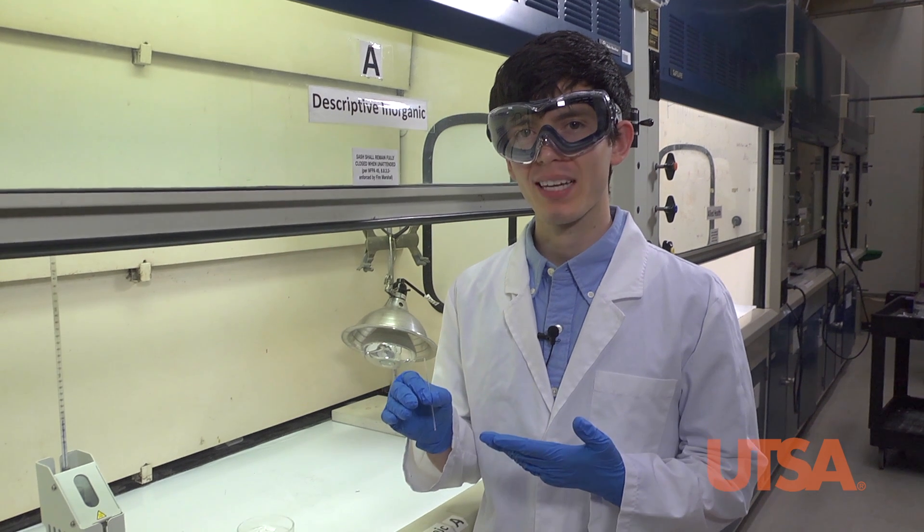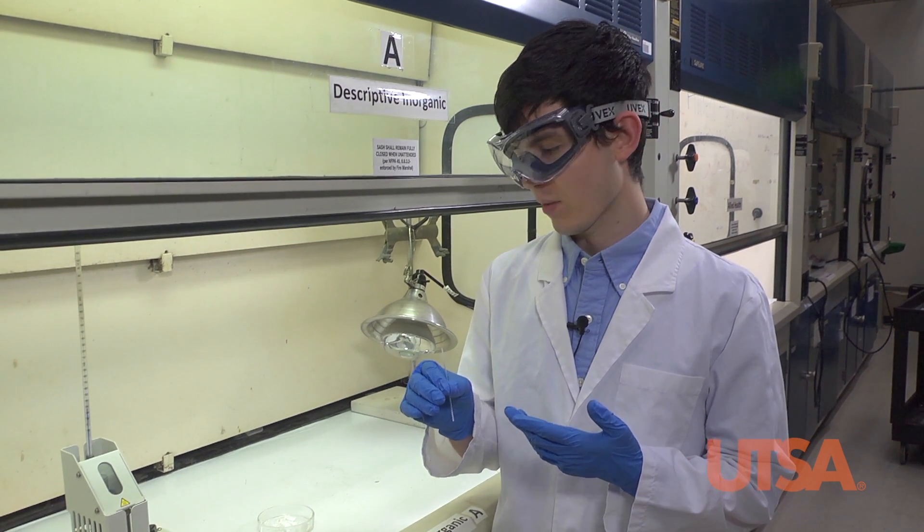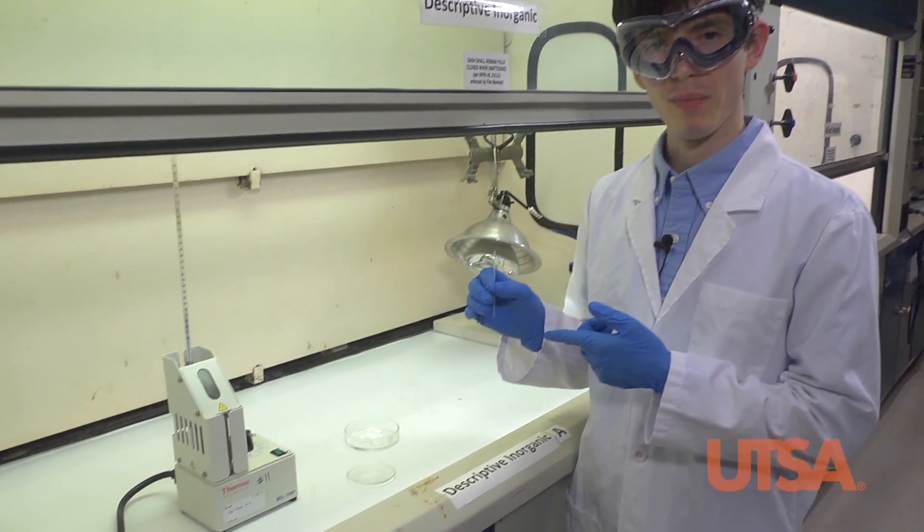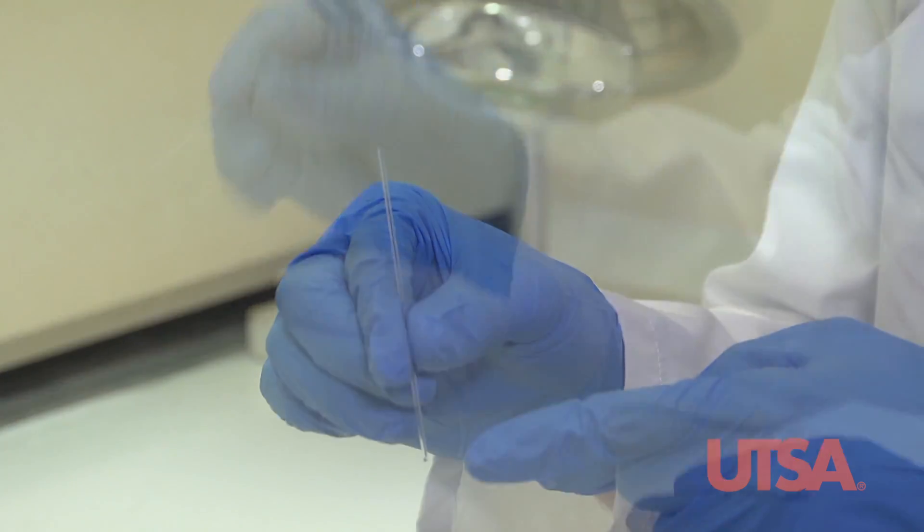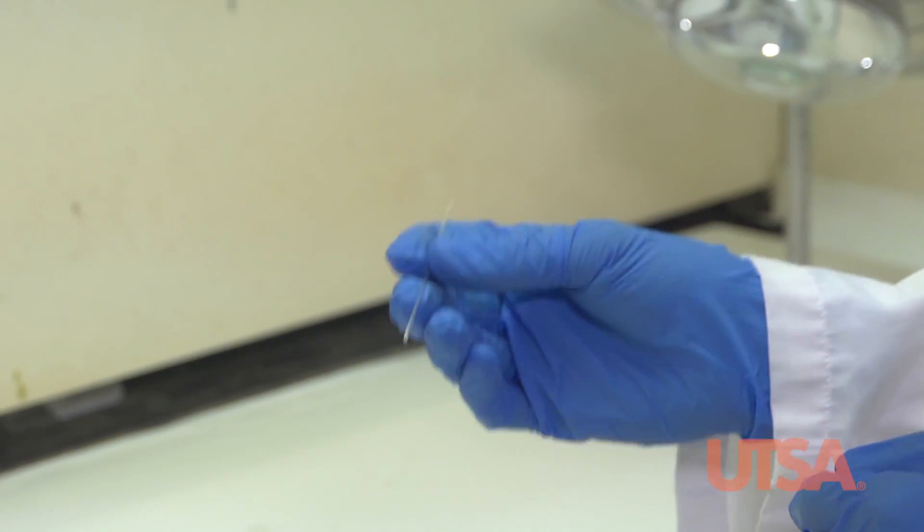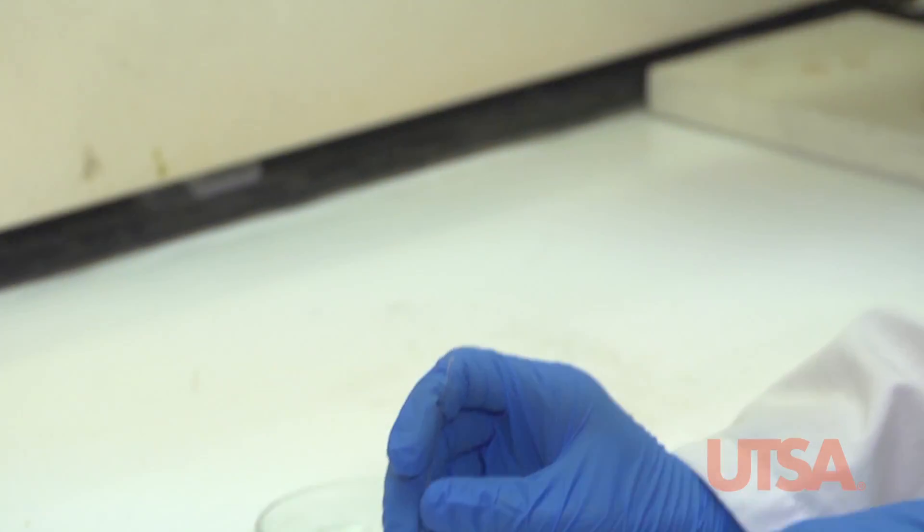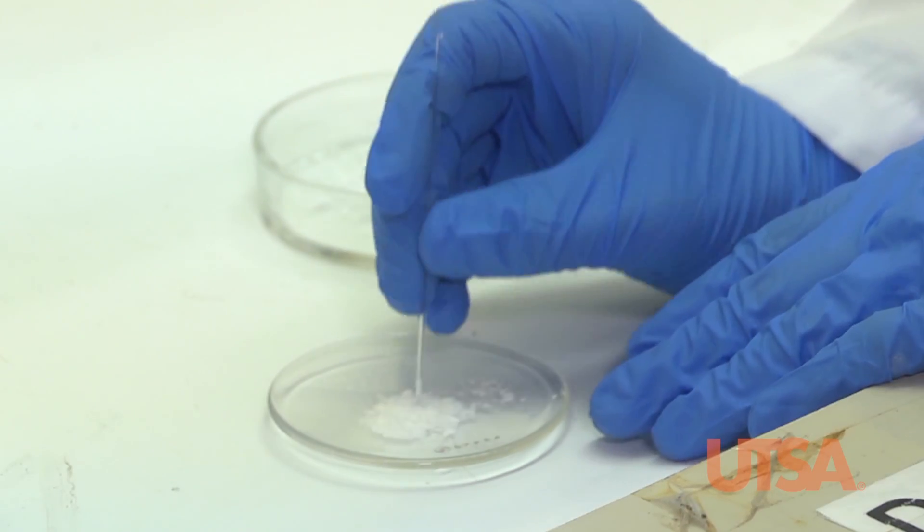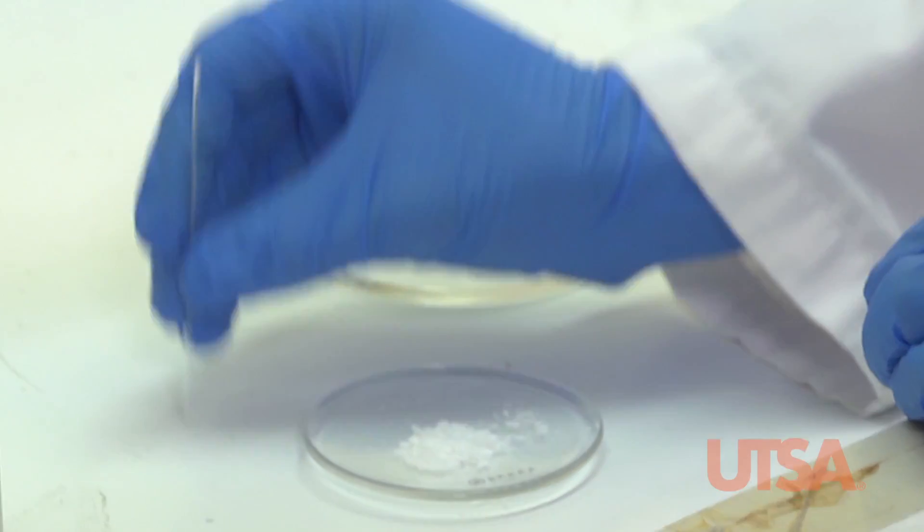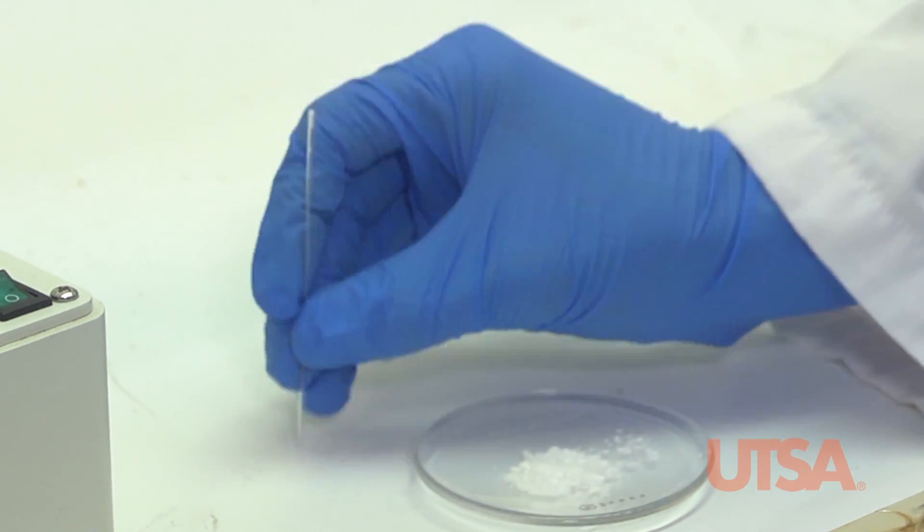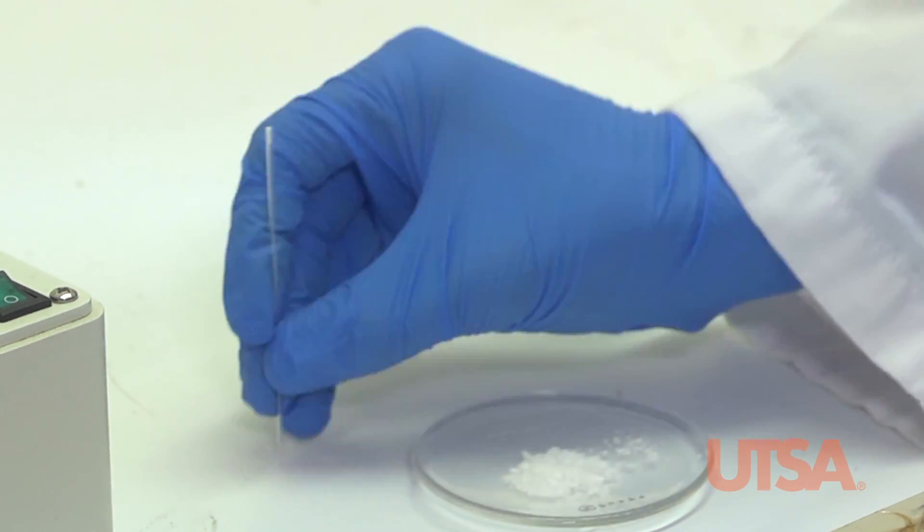Using a melting point capillary tube, we will obtain some of the product to determine the melting point. The tube has two ends, one open and one closed. Invert the tube so that the open end goes into the solid, turn the tube back over, and tap it so the product falls down to the closed end.